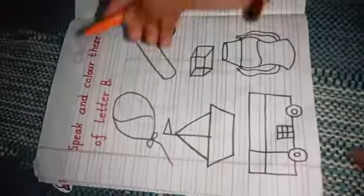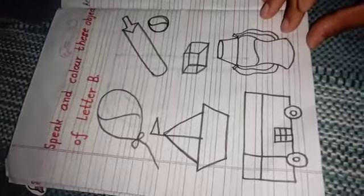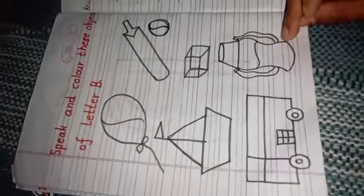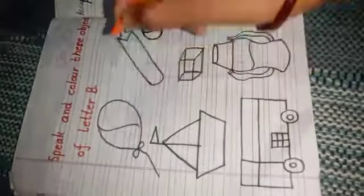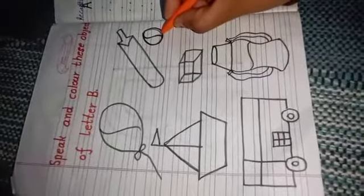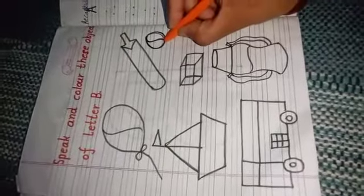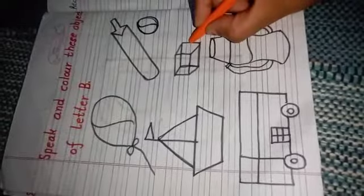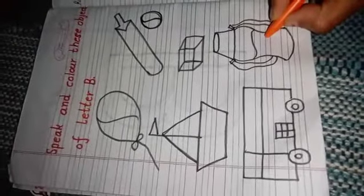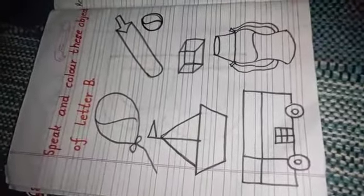Next, speak and color these objects of letter B. Parents, you have to draw some objects of letter B — if some objects are difficult to draw, you can skip them. Speak with me, bita. Biba Balloon. Biba Bat. Biba Ball — you are playing with the ball and bat in the evening on your terrace, yeah na bita? Biba Bot. Biba Box. Biba Bottle. And Biba Bus. Color these objects beautifully and speak also.